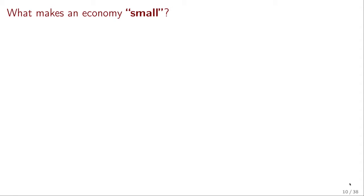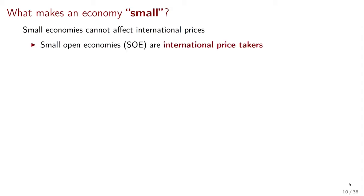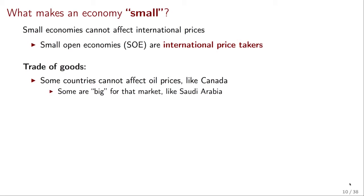The next question is: what makes an economy small? When we think of open economies being small, we mean that they cannot affect international prices. Effectively, small open economies are international price takers. This applies to the trade of goods — some countries are too small to affect the price of goods they are selling. One example is oil: Canada cannot affect the international price of oil, while Saudi Arabia can. As we saw last week, when Saudi Arabia increased oil production and offered discounts, it slashed international oil prices.